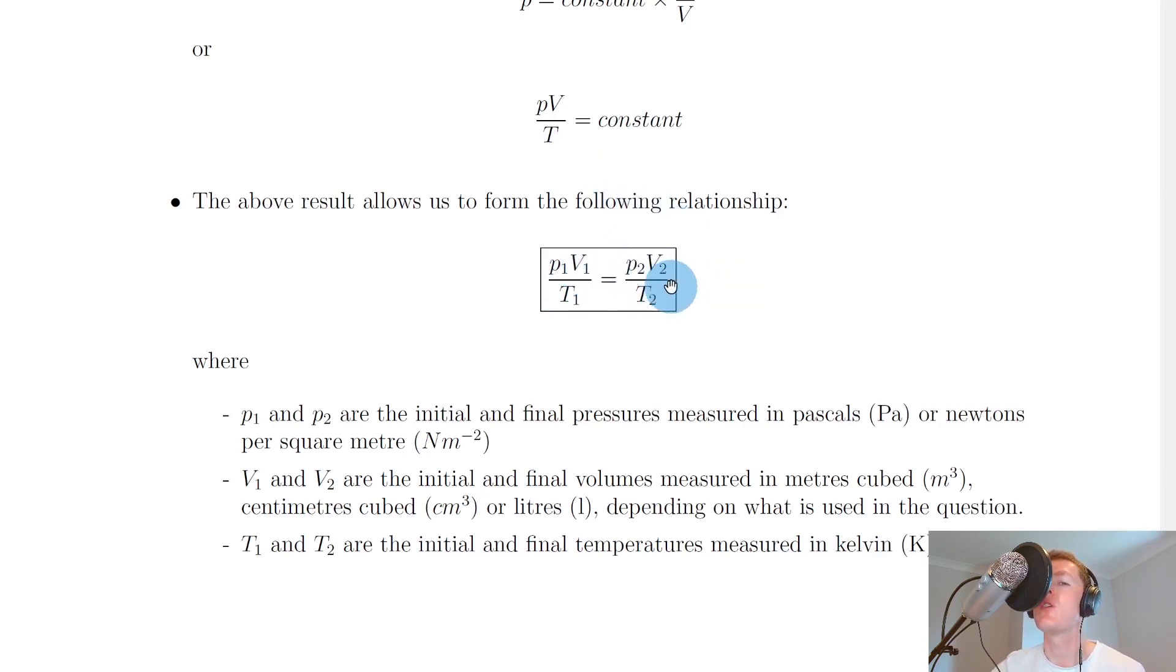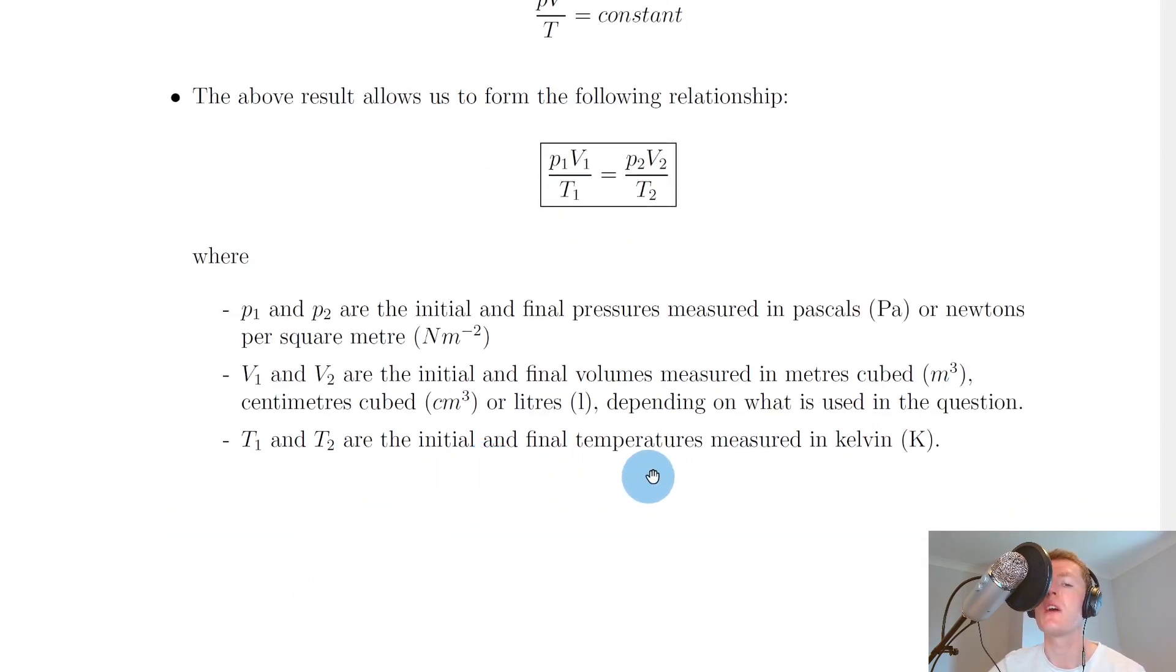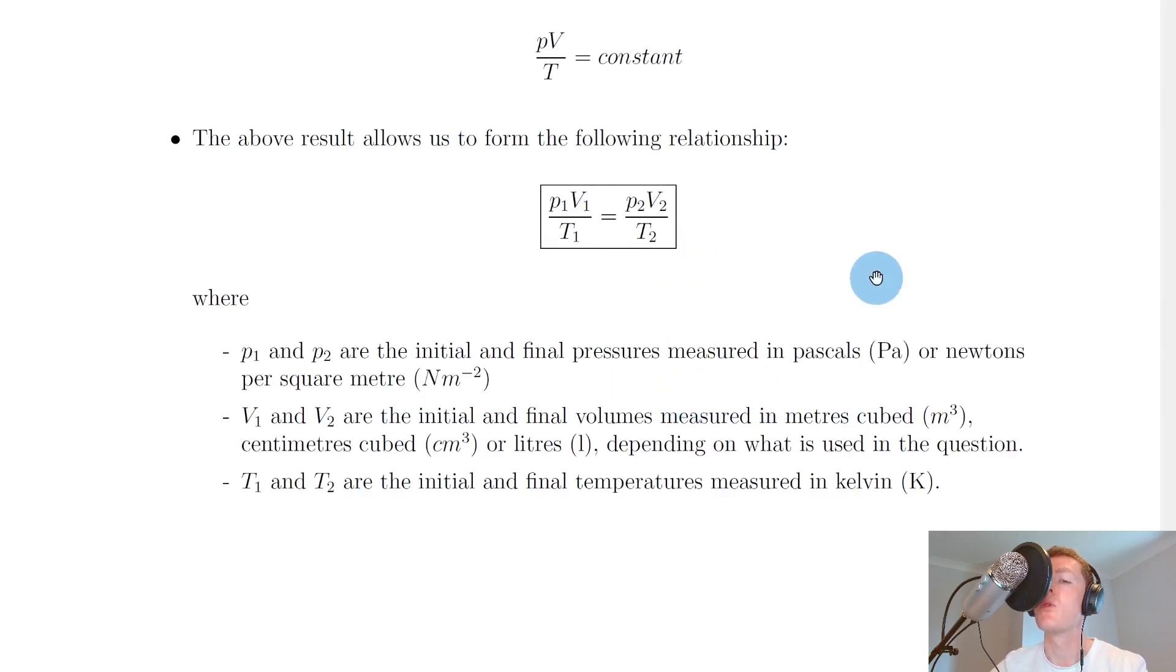So this is the trick we can do when we have something equals a constant. We can introduce these 1s and 2s. So we have that P1 and P2 are the initial and final pressures measured in pascals or newtons per square metre. We have V1 and V2 are the initial and final volumes measured in metres cubed, centimetres cubed or litres, depending on what is used in the question. And lastly, T1 and T2 are the initial and final temperatures measured in Kelvin.